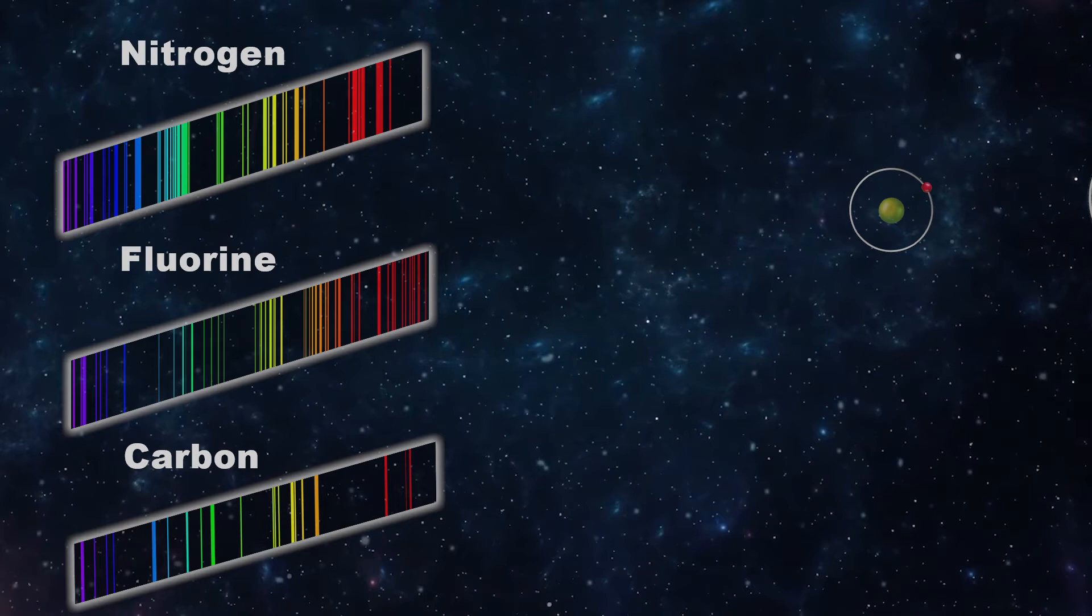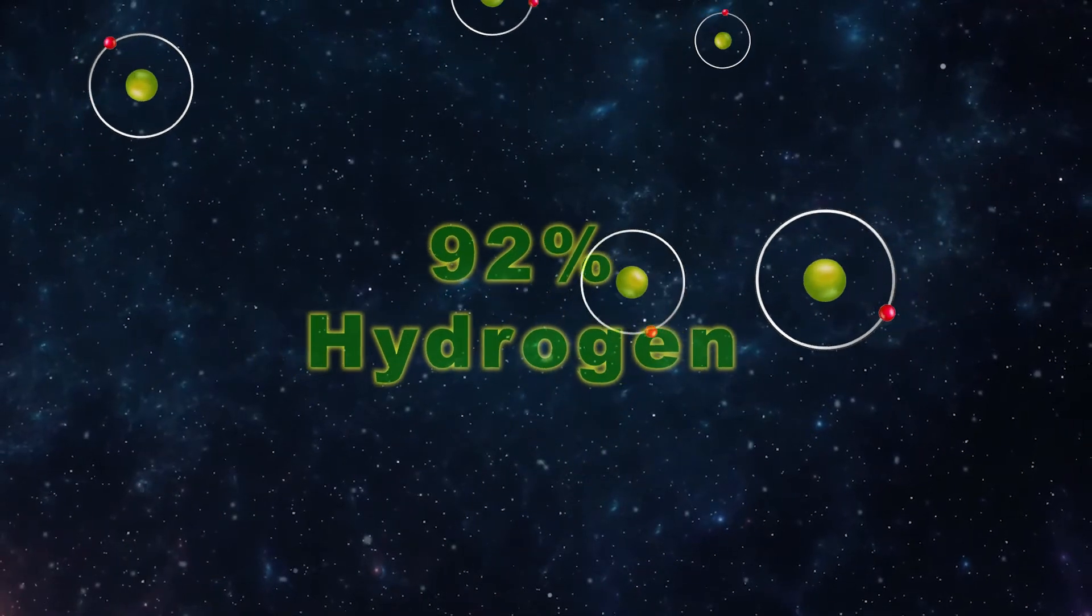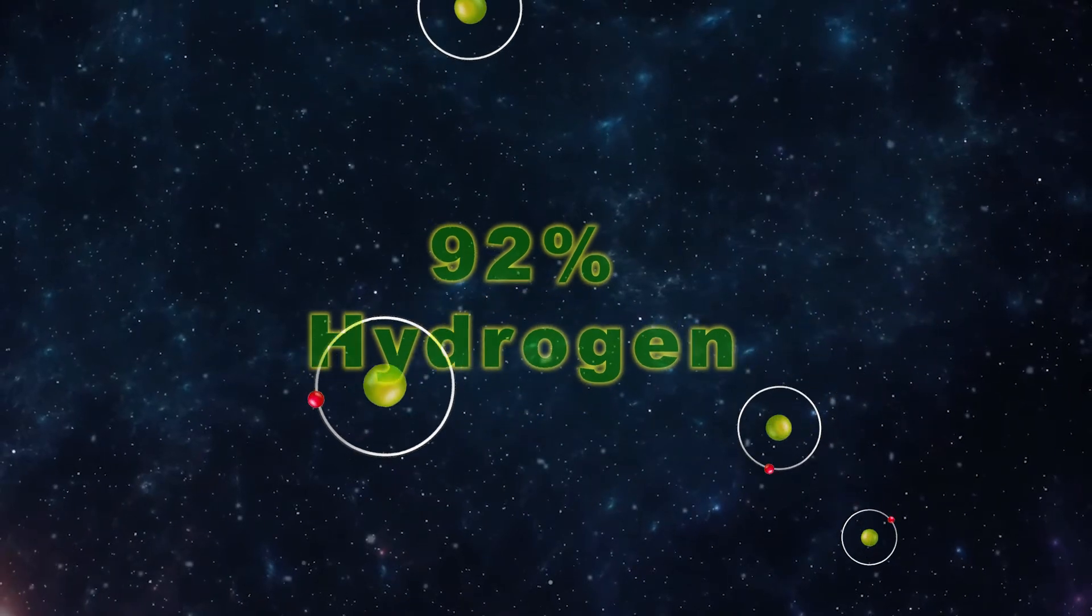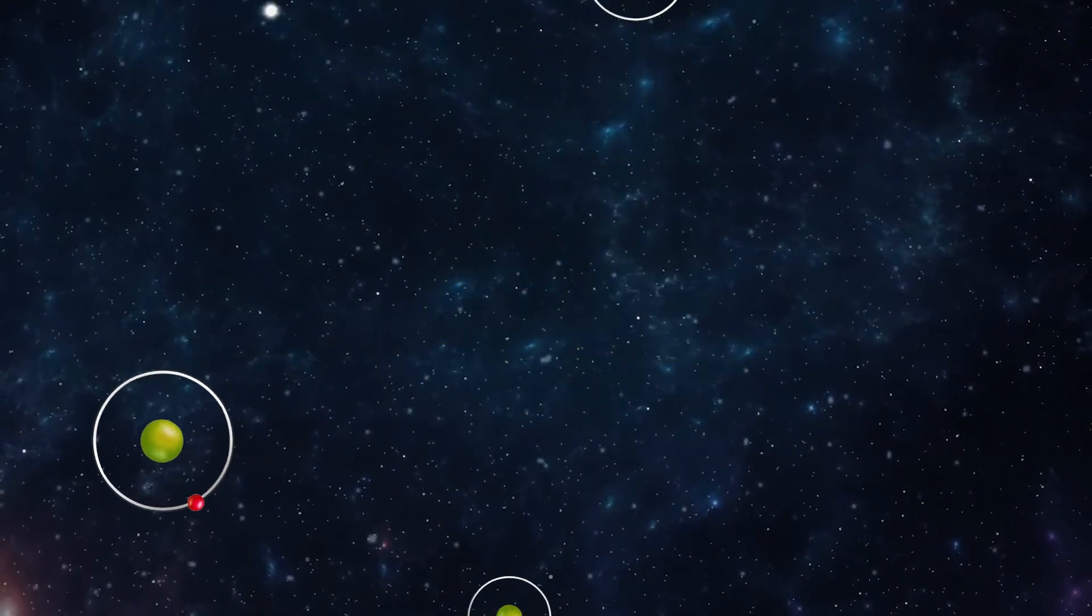Now for the bonus material. What do suns use for fuel? Hydrogen. 92% of all atoms in the universe are still hydrogen, the simplest element.